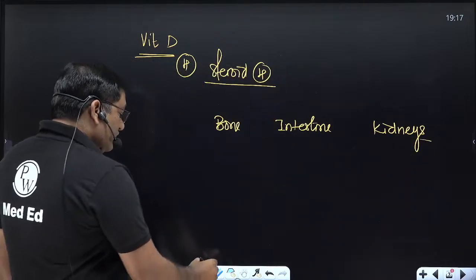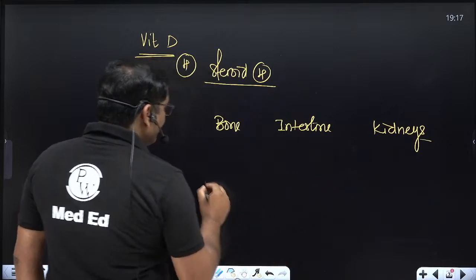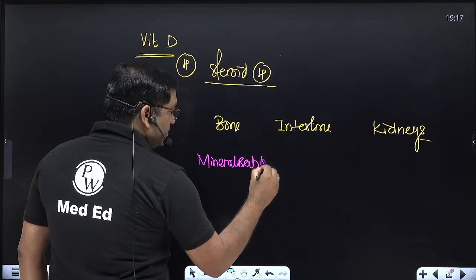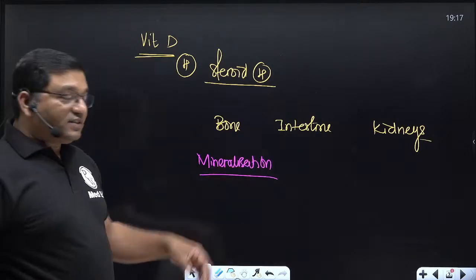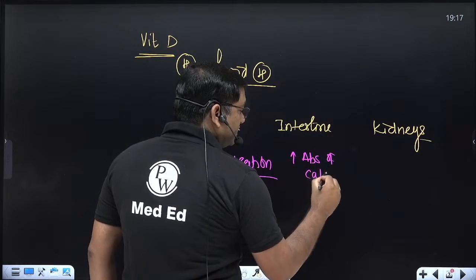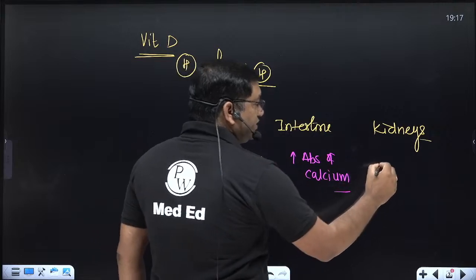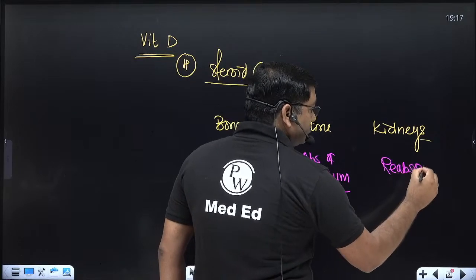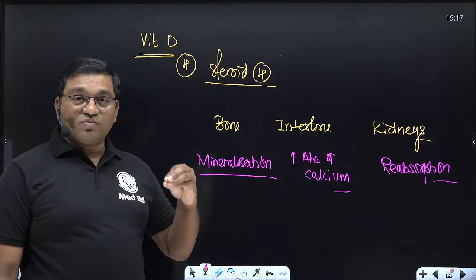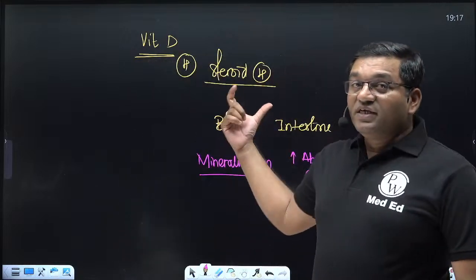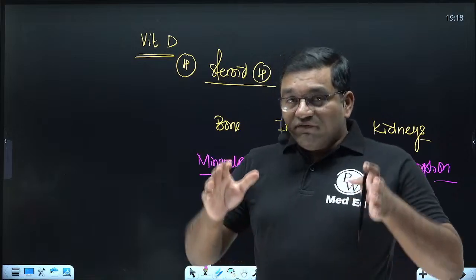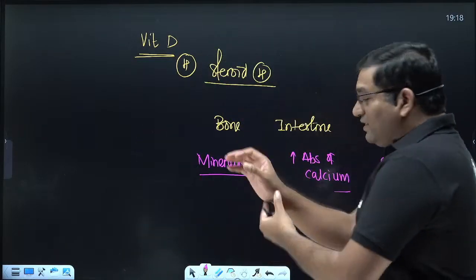Vitamin D has three target tissues: bone, intestine, and kidneys. In bone, it is responsible for mineralization. Calcium is important for mineralization of bone. In the intestine, it increases absorption of calcium. In the kidney, it is important for reabsorption of calcium. So vitamin D is essential for calcium and phosphorus regulation; its deficiency causes defective mineralization, resulting in spongy bones and bowing of weight-bearing bones.